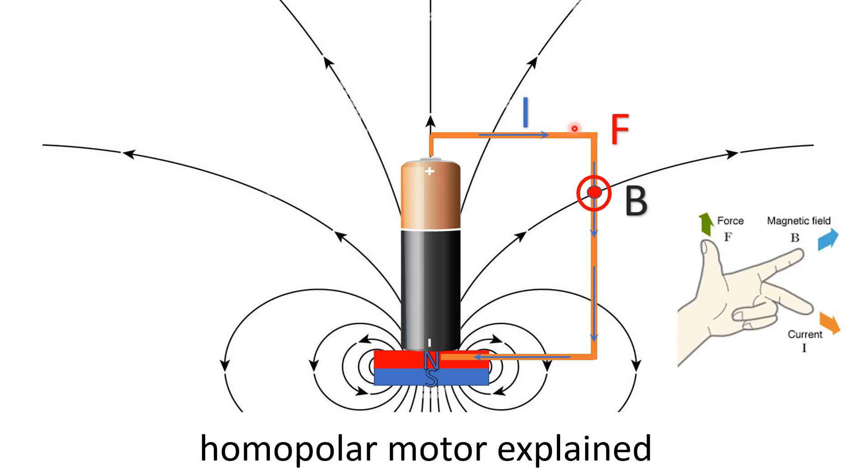In this case the current is running in this direction, the blue arrow. Magnetic field is in this direction, the black line, and then there will be a force that is coming up to us which means it will rotate this coil and that's how the homopolar motor works.